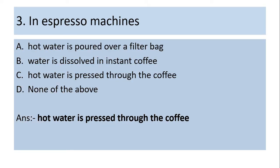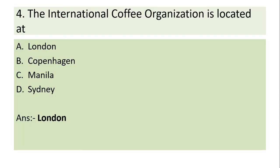In espresso machines — hot water is poured over a filter bag; water is dissolved in instant coffee; hot water is pressed through the coffee; or none of the above. Answer: Hot water is pressed through the coffee.